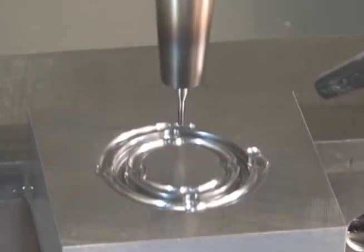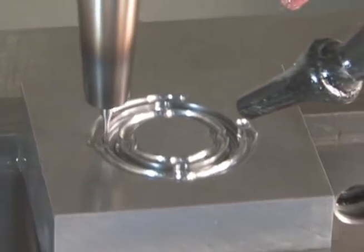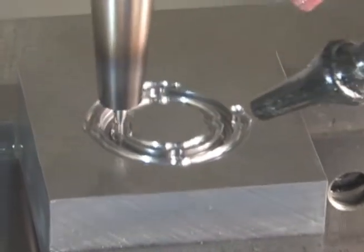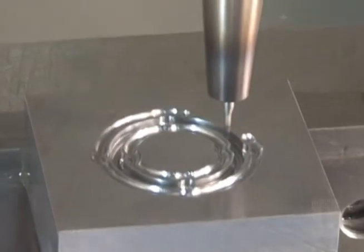We can also jog the axes away from the part to check it or to check the cutter. Slow operation with feed override.